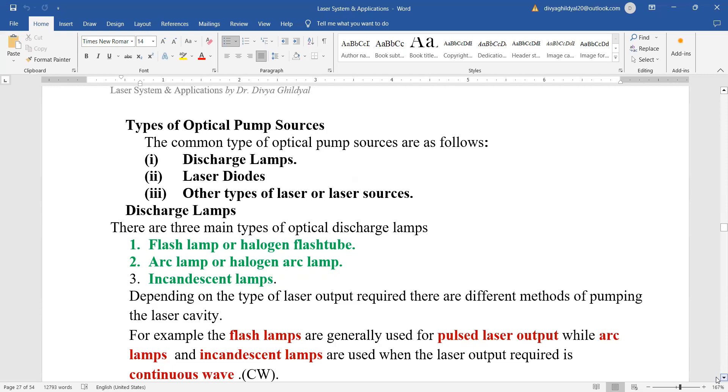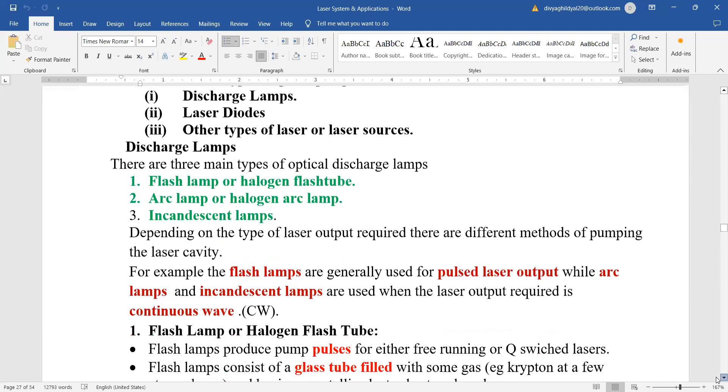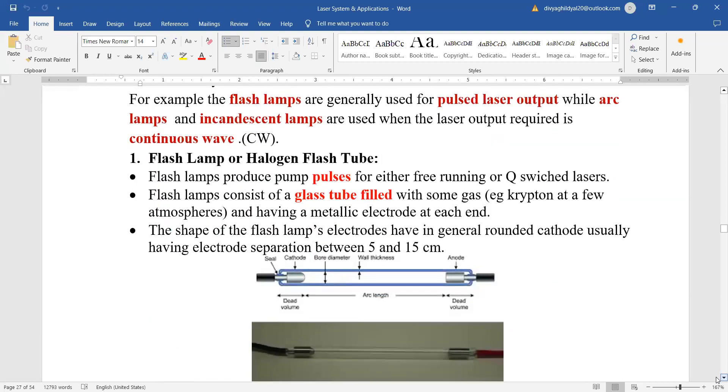Depending on the type of laser output required, there are different methods of pumping the laser cavity. The flash lamps are generally used for pulsed laser output while arc lamps and incandescent lamps are used when the laser output required is a continuous wave one.